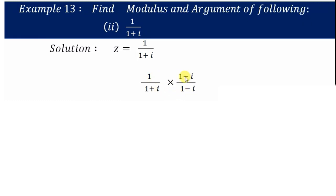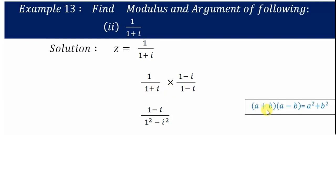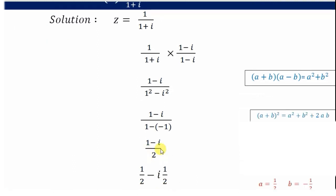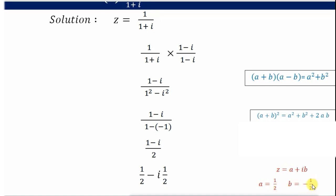We multiply 1 by (1-i) in the numerator, giving (1-i). For the denominator, using (a+b)(a-b) = a² - b², we get 1² - i² = 1 - (-1) = 2. So we get (1-i)/2, which can be written as 1/2 - i(1/2). This is now in standard form z = a + ib, where a = 1/2 and b = -1/2.